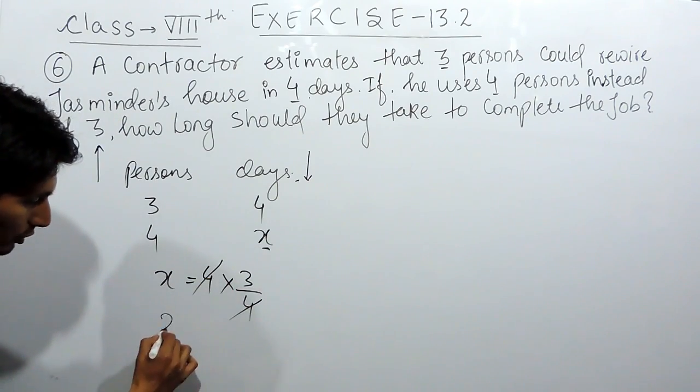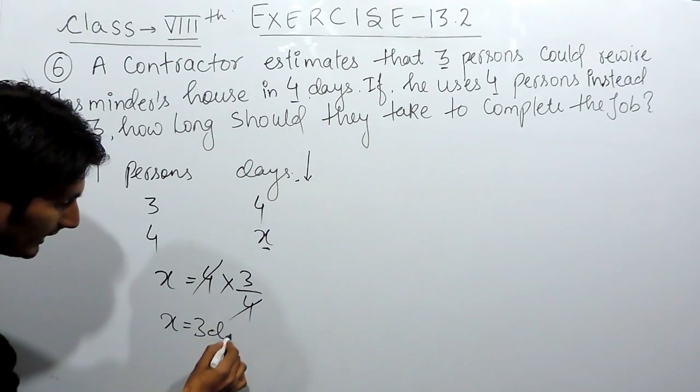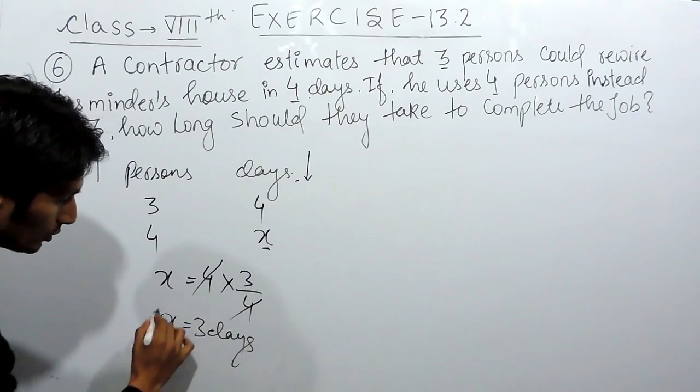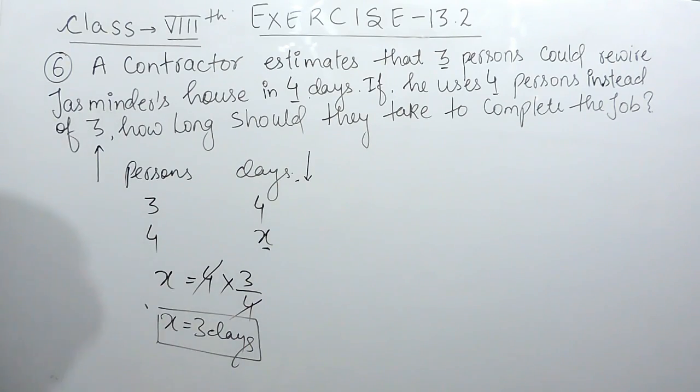And this 3 by 4 can be written as it is. So, 4 can be cancelled with 4. So, the value of x will be 3 days. So, this can be the first method of solving this question.